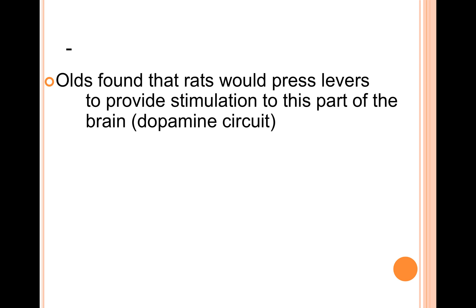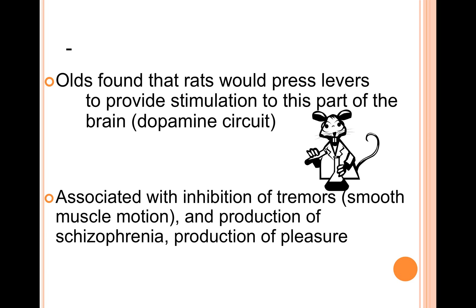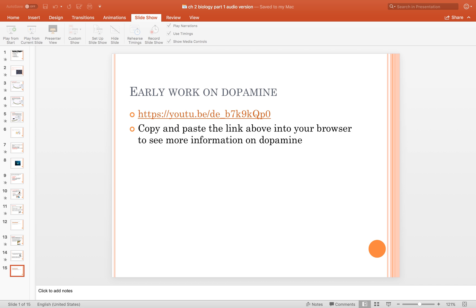Olds found that rats in early research would press a lever to stimulate the dopamine circuit and do so to exhaustion. To summarize the importance of dopamine: it's extremely important in pleasure, important in inhibition of tremors, and in the production of schizophrenia symptoms. If you're interested in seeing more about early work on dopamine, you can copy and paste the link shown in this slide. Hope you enjoyed this discussion — next time we'll turn to a discussion of brain structure and function.